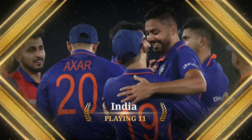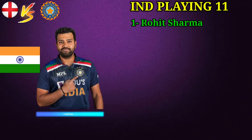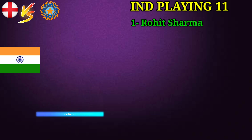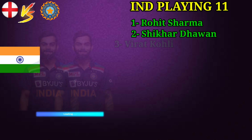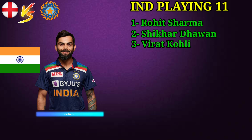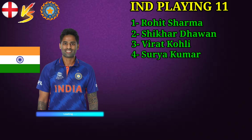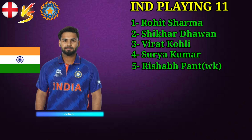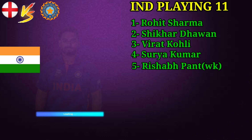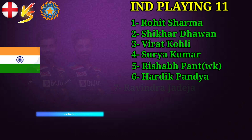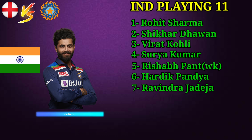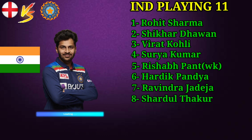Team India Final Playing 11 vs England. No. 1 Rohit Sharma, Captain and Batsman. No. 2 Shikhar Dhawan, Left-handed Batsman. No. 3 Virat Kohli, Right-handed Batsman. No. 4 Suryakumar Yardav, Right-handed Batsman. No. 5 Rishabh Panth, Wicketkeeper Batsman. No. 6 Ardhik Pandya, All-Downers. No. 7 Ravindra Jadeja, All-Downers. No. 8 Sardul Thakur, All-Downers.